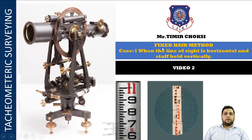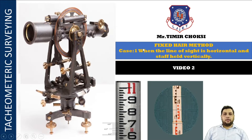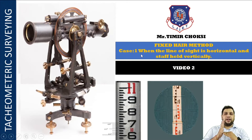Hello students, welcome to session number two of tachymetric surveying. In this session I have explained a fixed hair method. In a fixed hair method, three cases are involved. In this particular session I have taken and explained case number one, when the line of sight is horizontal and staff is vertical.